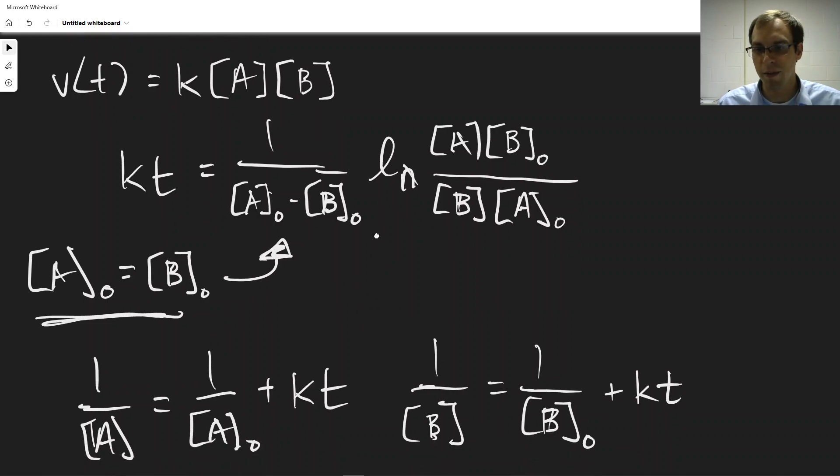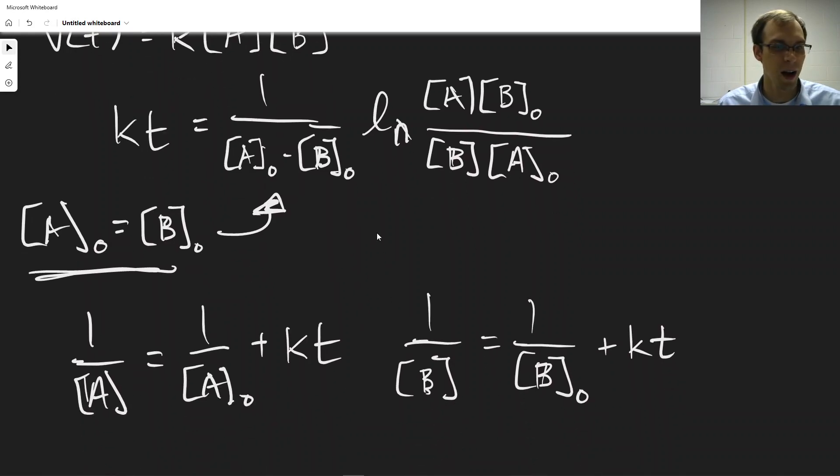So that is it for second order reactions, and that is it for this section of the chapter. So next we're going to look at reversible reactions, the reactions that can go forward and reverse, and keeping track of the rates of the forward and reverse reactions. But we'll get to that in the next video.